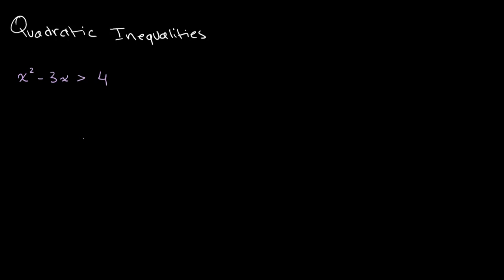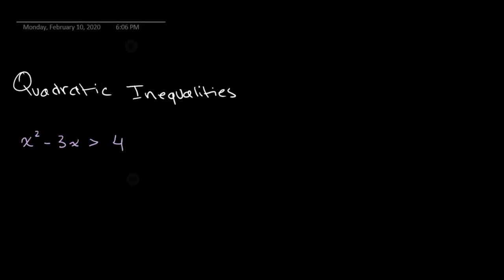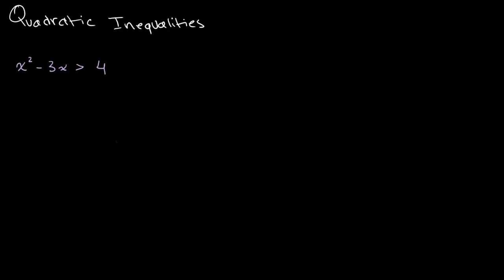We have x squared minus 3x is greater than 4, and we want to solve this inequality. The first step would be to get everything on the same side, so we have x squared minus 3x minus 4 is greater than 0.